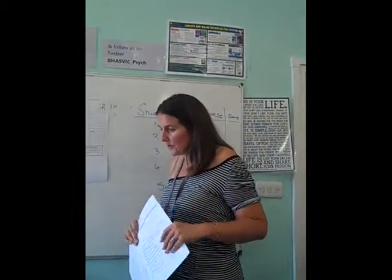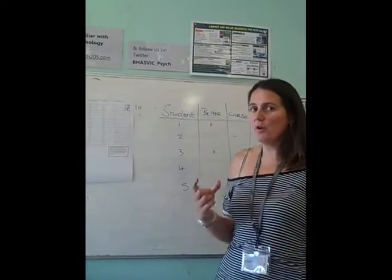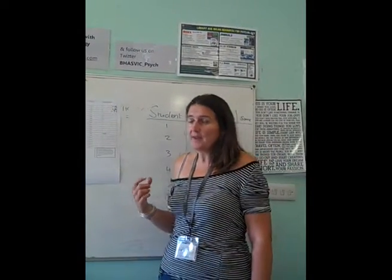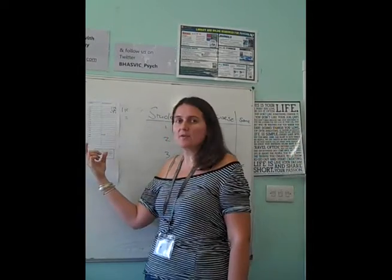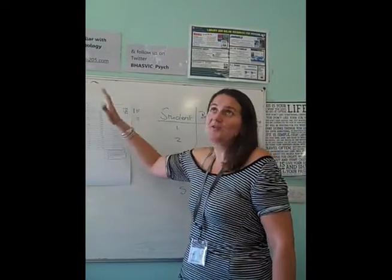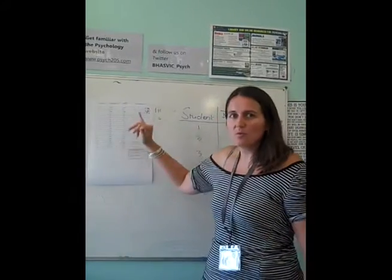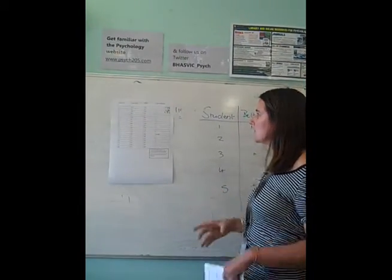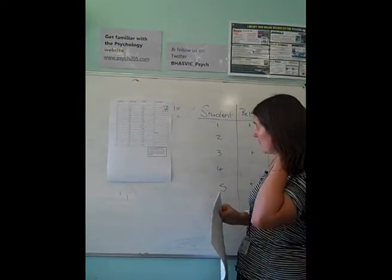So how do you convert that into nominal data? Well, simply, all that you do is you take away one of the scores from the other. Now, actually, it doesn't matter which way round you do it, as long as you consistently do it the way that you do it for every single bit of data. So what do I mean by that?